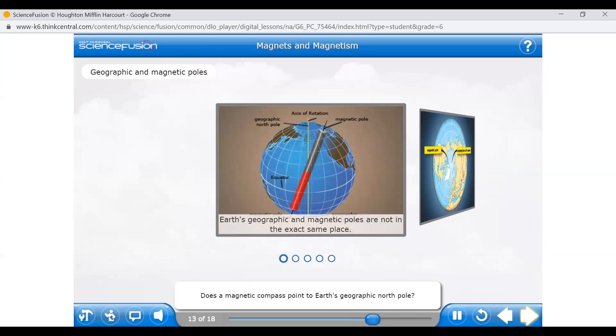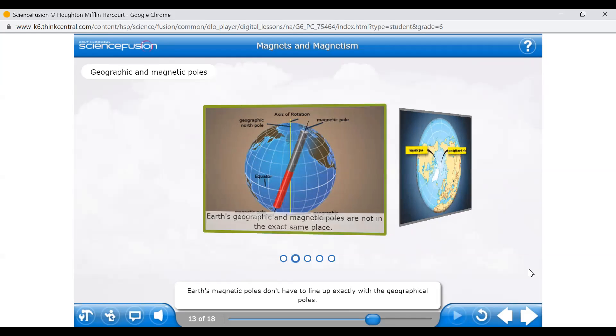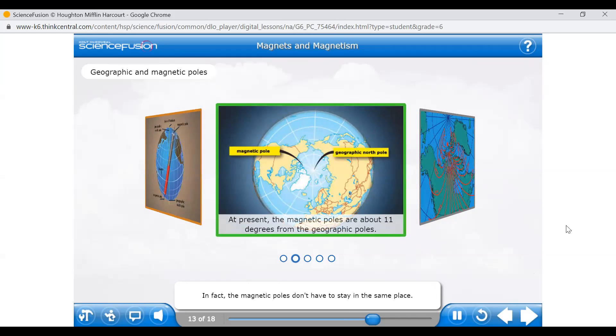Does a magnetic compass point to Earth's geographic north pole? As it turns out, not quite. The geographic and magnetic poles on Earth are in slightly different locations. Click the images to learn more. Earth's geographical poles are the points where its axis of rotation intersects with its surface. These points depend only on Earth's rotation so they remain in the same place. But Earth's magnetic field is produced by several different motions in the outer core. Earth's magnetic poles don't have to line up exactly with the geographical poles. In fact, the magnetic poles don't have to stay in the same place. Sometimes they drift. Often over long periods of time they change directions. At present, the magnetic pole in Earth's northern hemisphere is about 11 degrees south of the geographic north pole, near Ellesmere Island in northern Canada. But where will it be in 10 years?